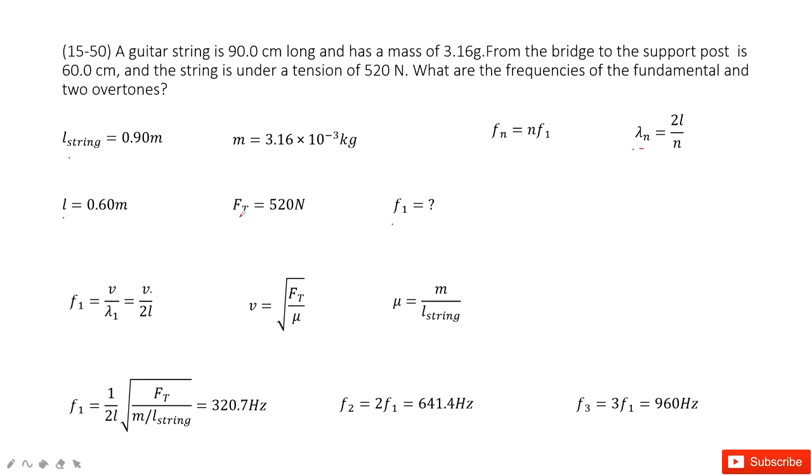What is given? Ft, the tension, is given. So we can get the velocity using this function: v equals the square root of Ft over μ.